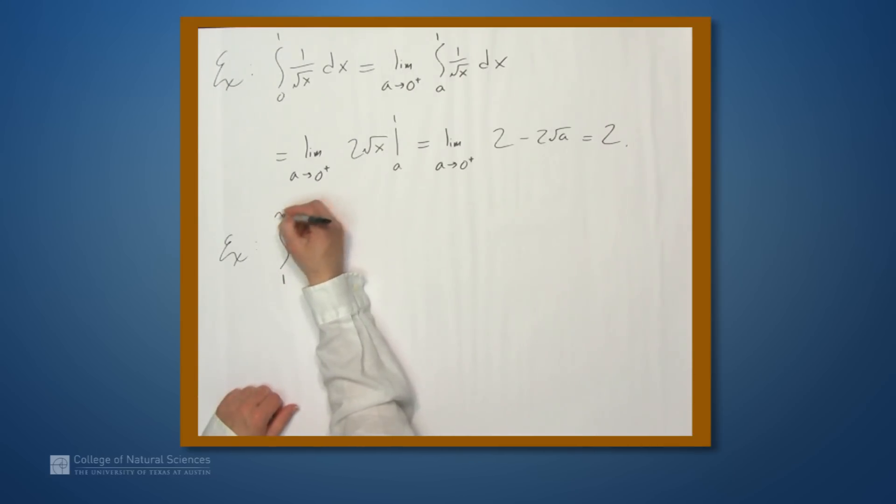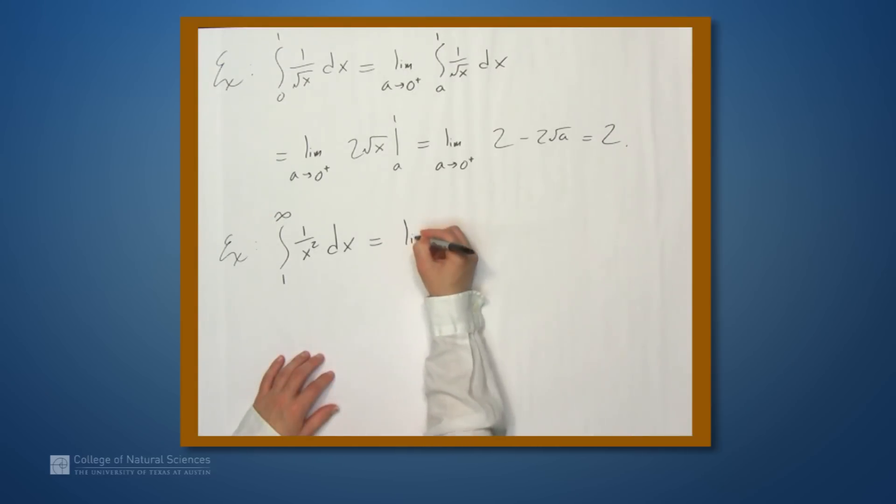So let's look at an example, integral from 1 to infinity, 1 over x squared dx. Well, how can we define this in a way that makes sense using the same idea that we used here? Well, we can't evaluate a function at infinity, but we can evaluate it at ever larger values.